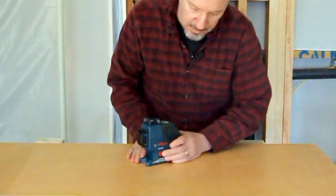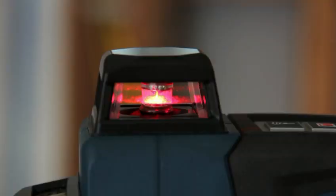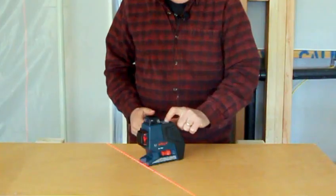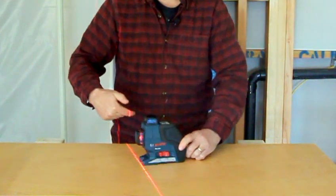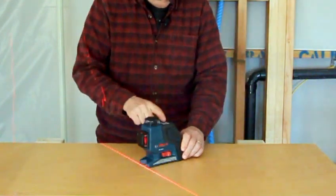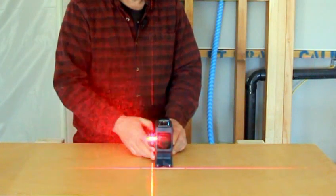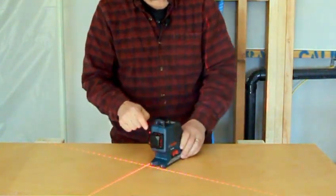You turn the tool on by sliding this lever. Right now I've got the level beam on. If I hit the button, I put the plumb beam coming out of here on. If I hit the button again, I put the second plumb beam on. Now I've got a plumb beam coming out of here and here.